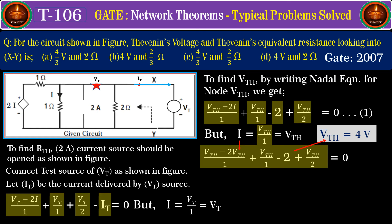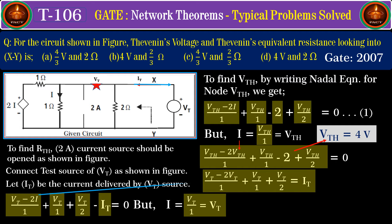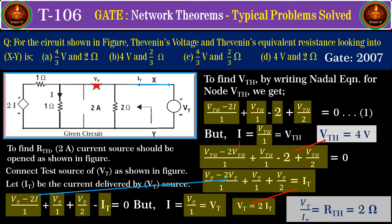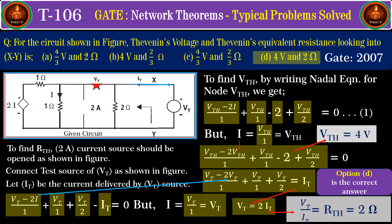Since i equals VT, substituting into the equation gives (VT minus 2VT) divided by 1 plus VT divided by 1 plus VT divided by 2 equals IT. Solving, the ratio VT divided by IT gives R_thevenin equals 2 ohms, and hence option D is the correct answer.